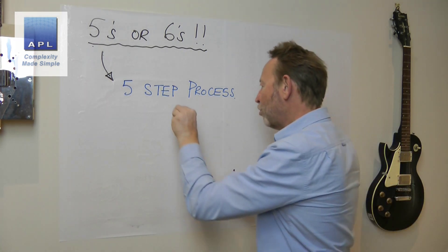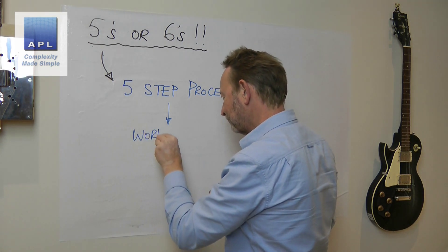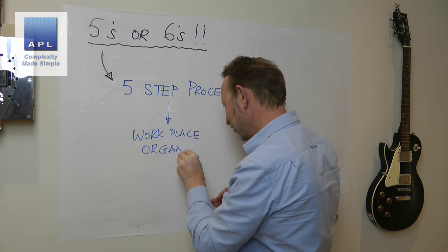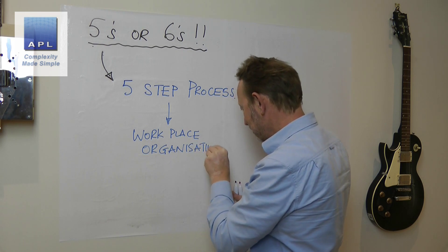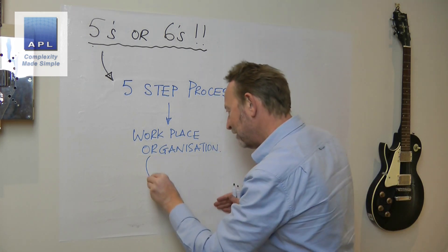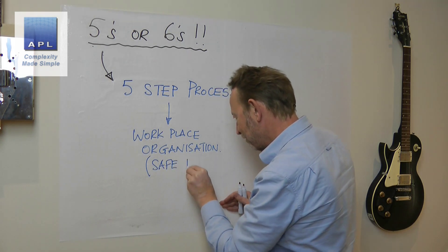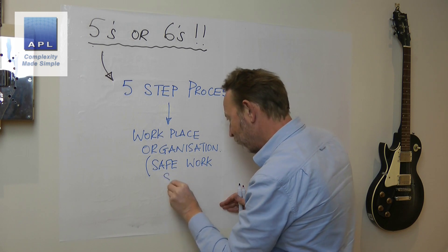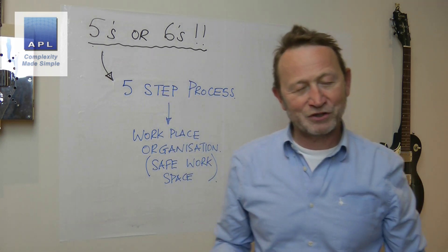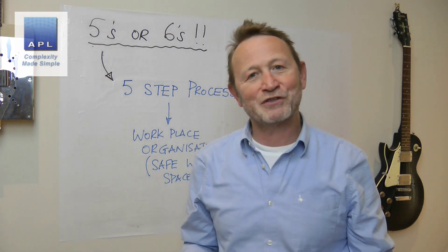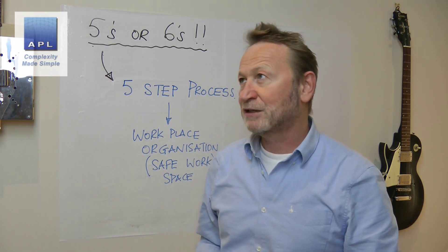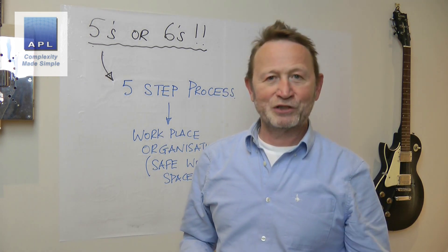It is a five-step process that delivers workplace organization. Workplace organization is the output from 5S, and workplace organization means a safe workspace. So safety is one of the outputs from 5S — it can never be one of the inputs to 5S, because it's five things you've got to do.